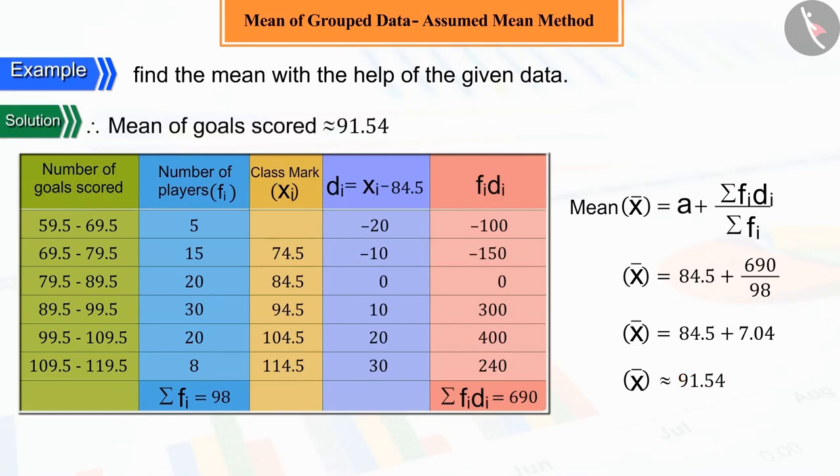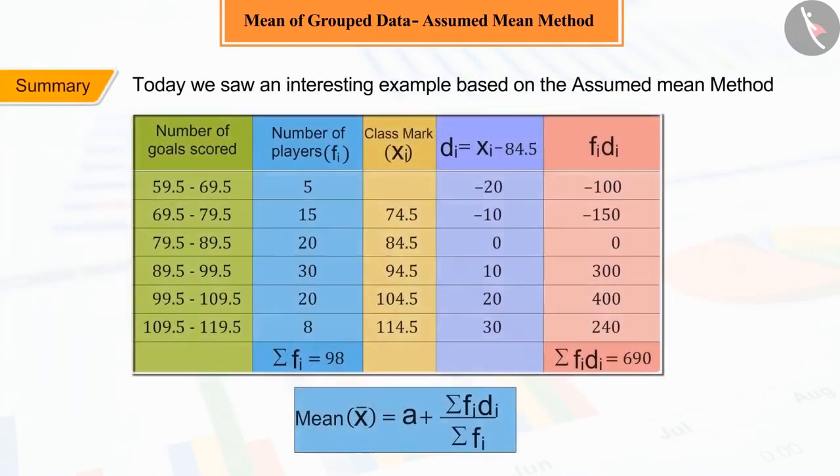Hence, we can say that the mean of the goal score is 91.54. So, hope you must have understood the assumed mean method of finding the mean.